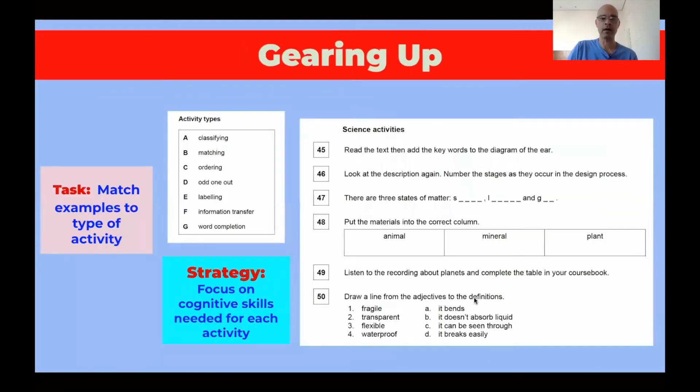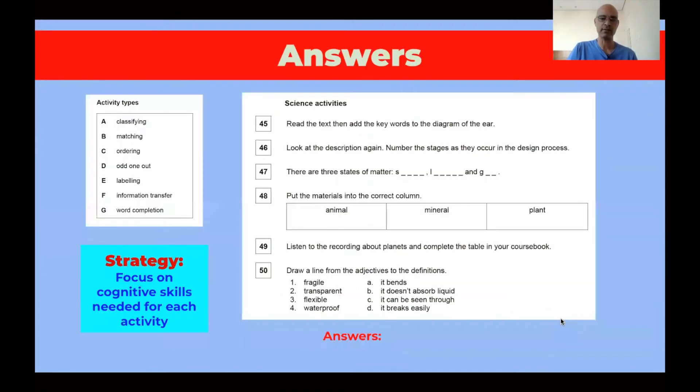But before we get to the answers, let's understand one thing here. So our task is to match examples, 45 to 50, to the types of activity. So let's focus on the cognitive skills needed for each activity. So for example, classifying, what does it demand? And also question 45, what are students being asked to do? So by combining those two elements, by focusing on the cognitive skills needed for each activity, we'll be able to match them. So let's get to the question.